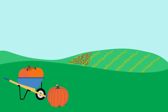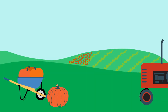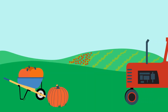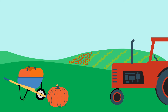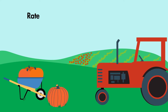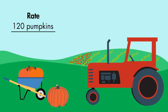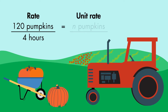A farmer is harvesting his pumpkin crop for the year. Today, he loaded 120 pumpkins onto his tractor in four hours. We can find the unit rate to see how many pumpkins the farmer can harvest in one hour.